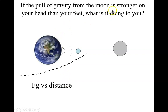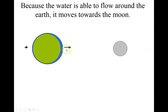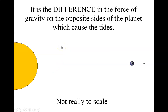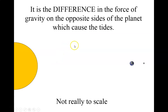Think of it this way: if the pull of gravity on the Moon is stronger on your head than your feet, it's stretching you out. Because the Earth is surrounded by water, the Moon is able to stretch the water out. Water is able to move around the Earth as the Earth rotates. So on the side closer to the Moon there's a bulge — that's one of the tides. The key word here is 'difference' — it's the difference in the force of gravity on opposite sides that causes the tides.